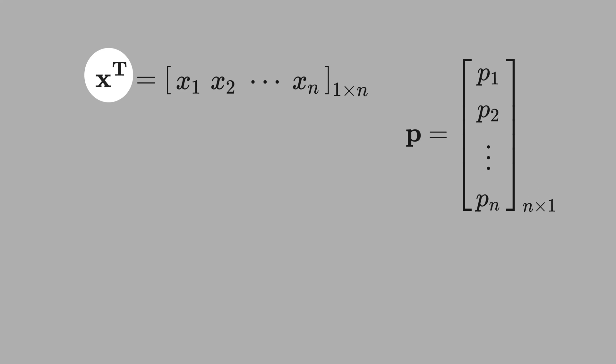That's why we use here x transpose, t is the transpose, and here in the p there is no t, no transpose. We can only multiply x times p if the n columns here match with n rows.